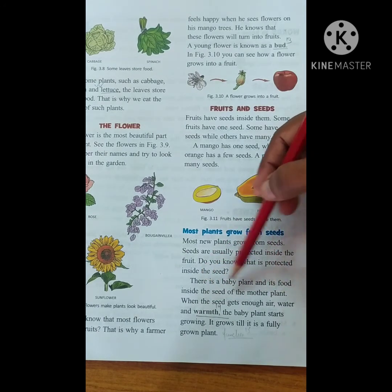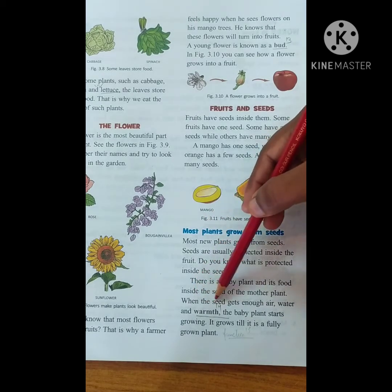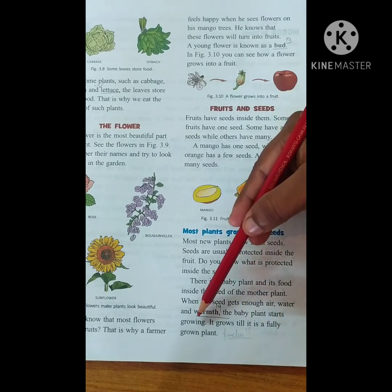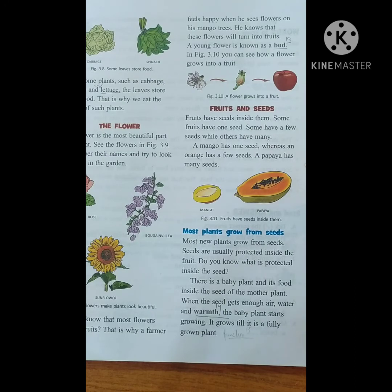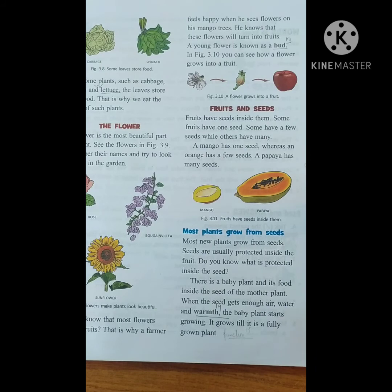There is a baby plant and its food inside the seed of the mother plant. Food is present for the baby and that baby plant is protected by the mother plant. When the seed gets air, water, and warmth, the baby plant starts growing until it is a fully grown plant. When plants get enough air, sunlight, warmth, and water, they reproduce and new plants grow — this is the reproduction of plants.